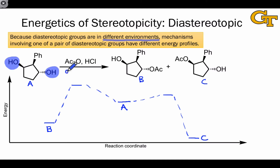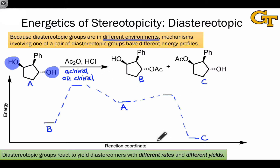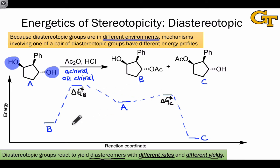This is true whether the reaction conditions involved are achiral or chiral. The hydroxyl groups are in different spatial environments by virtue of being diastereotopic — that has nothing to do with whether the reaction conditions are achiral or chiral. The practical punchline is that diastereotopic groups react to yield diastereomers with different energies, different rates, because the activation energies leading to the two diastereomers — delta G double dagger C and delta G double dagger B — are necessarily different, and different yields. The yields depend on both the activation energy difference and the difference in overall free energy changes from A to B and A to C. The yields of B and C will be unequal regardless of the reaction conditions.